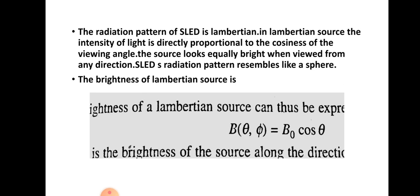The radiation pattern of a surface emitting LED is a Lambertian pattern. In the case of a Lambertian pattern, the source appears equally bright when viewed from any direction, and the intensity of light is directly proportional to the cosine of the viewing angle. So the radiance can be written as B(θ, φ) = B₀ · cos θ.